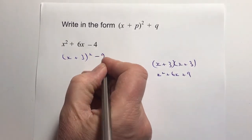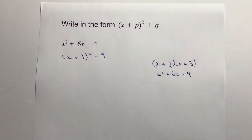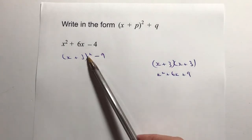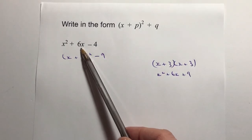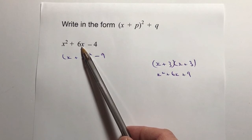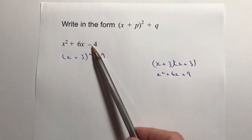The problem is I've got this plus 9 to deal with, so what I'm going to do is I'm going to minus 9. And that effectively means that this, when I work it out, is going to look the same as those two terms here.